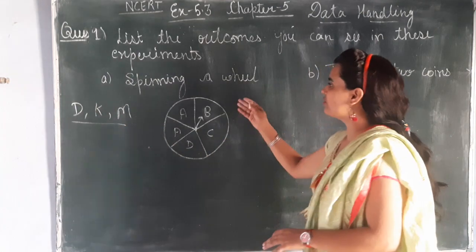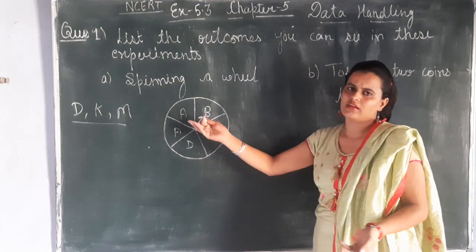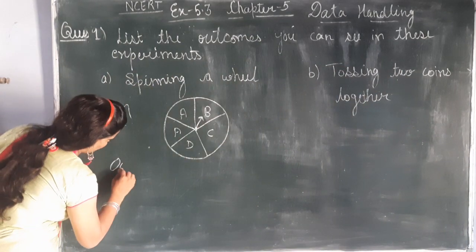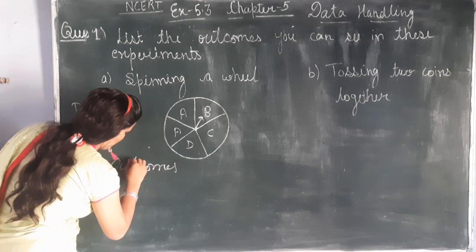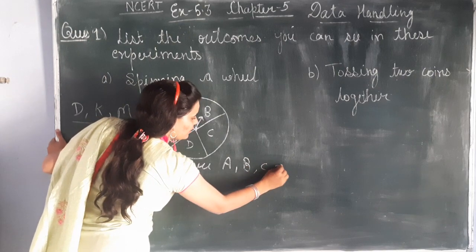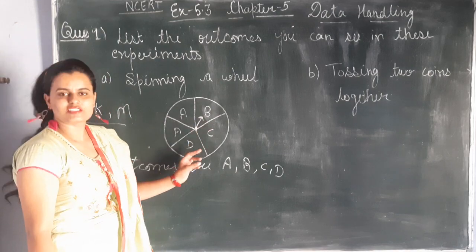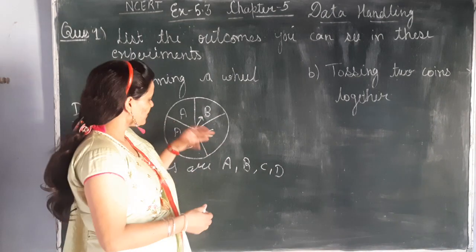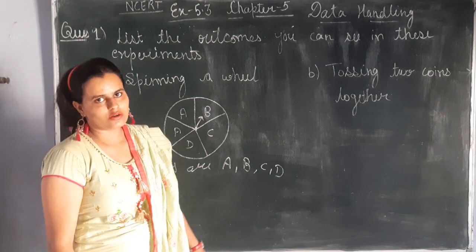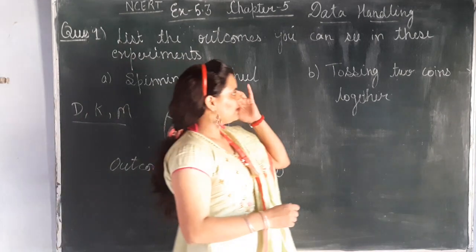When you spin the wheel, the outcomes that can come out are A, B, C, or D. Again, A, B, C, D. So the outcomes are A, B, C, and D — other than these, there are no other outcomes.